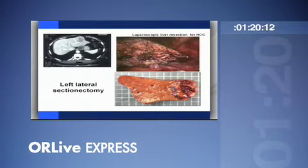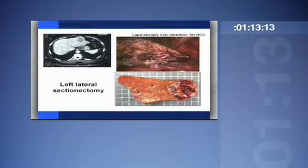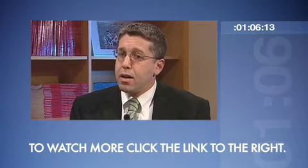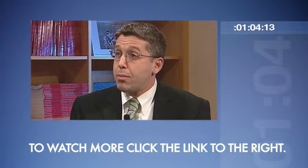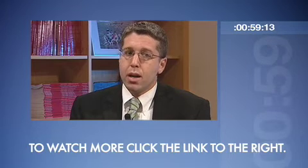The first surgery that we started routinely applying laparoscopy to was tumors on the left side of the liver, in what we call segments two and three. They are quite amenable to laparoscopic surgery, and we can get clear margins, remove the tumor, and leave plenty of liver left so that the patients do very well afterwards.